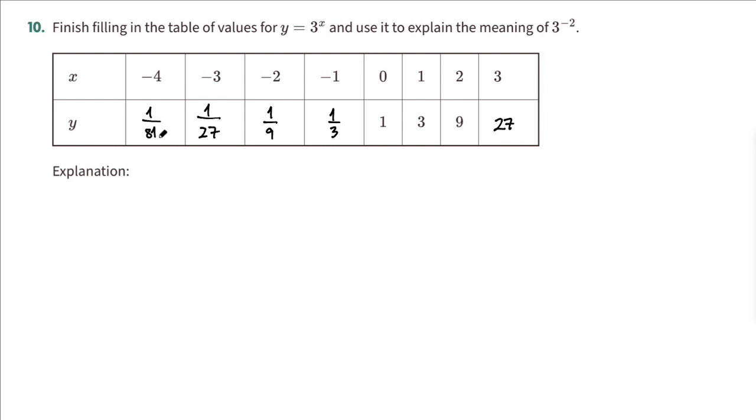And we'd like to use this to explain the meaning of 3 to the negative 2. Since we are thinking of this as multiplication going in the right direction, and going to the left, we think of it as division, so we can think of 3 to the negative 2, we can say this can be thought of as dividing by 3 twice.